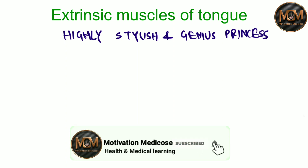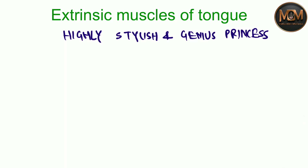We are just going to consider the alphabets. Consider H from 'Highly,' S from 'Stylish' — you can consider S as well — just ignore the rest, then consider G from 'Genius,' and then P from 'Princes.' So I'm just going to write it out: H, S, G, and P.